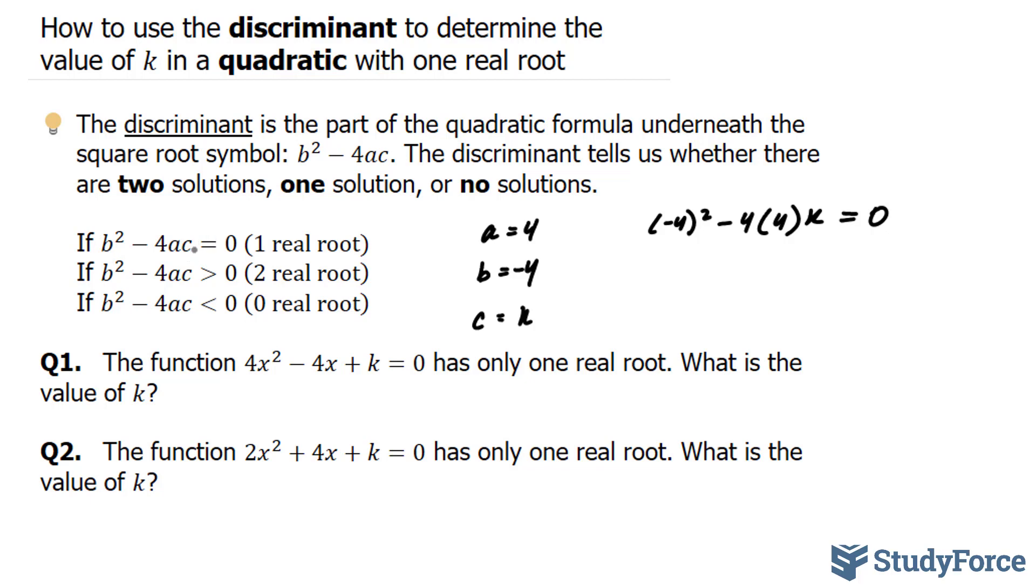Remember, your discriminant has to equal zero for there to be one real root. And we're looking for a value of k that'll make the left side and the right side the same.